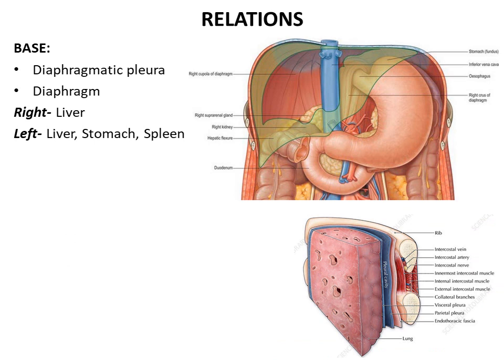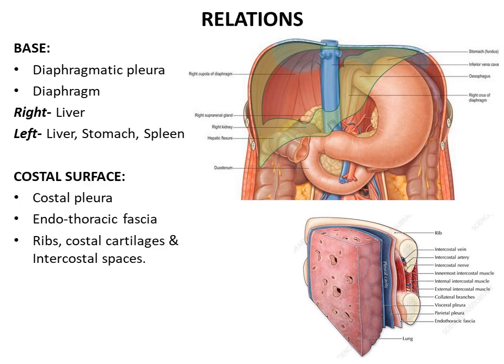The base of the lung is related to the diaphragmatic pleura and the diaphragm. The base of the right lung is more concave due to the underlying right lobe of the liver. The left lung is related to the left lobe of the liver, fundus of stomach, and the spleen. The costal surface is related to the thoracic wall from inner to outer: costal pleura, endothoracic fascia, ribs, their costal cartilages, and the intervening intercostal spaces.